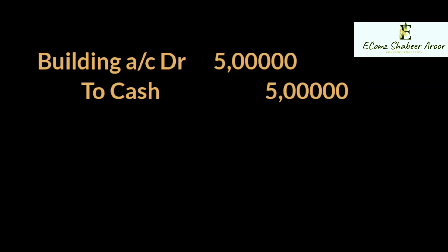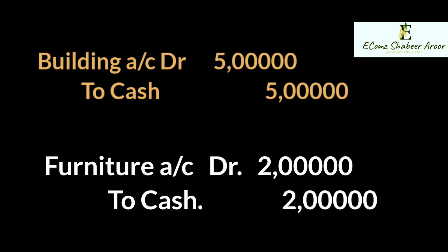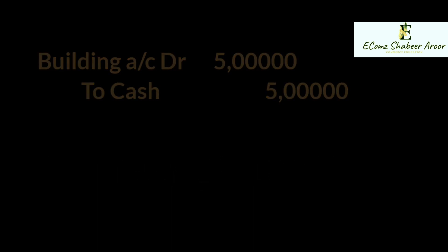The two entries are the same. Building debited, to cash, 5 lakh rupees. Furniture debited, to cash, 2 lakh rupees. These are two separate journal entries for the same cash account.